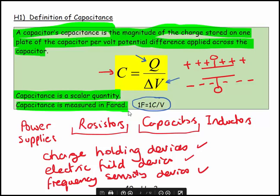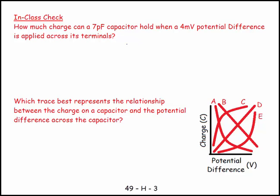So let's have a look at one of these. What we're saying here is: how much charge can a 7 picofarad—you got to know your prefixes—so this is 7 picofarad capacitor hold when there's a 4 millivolt potential difference across it?